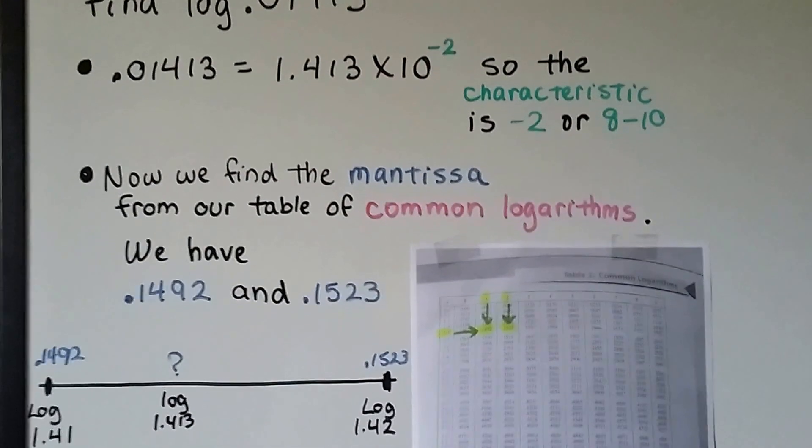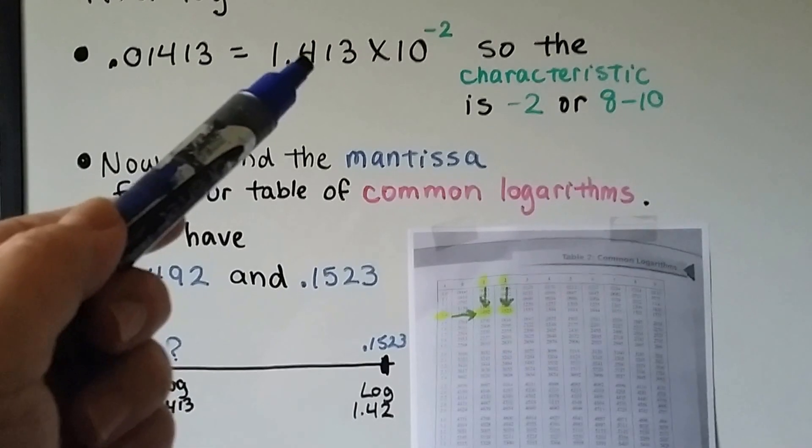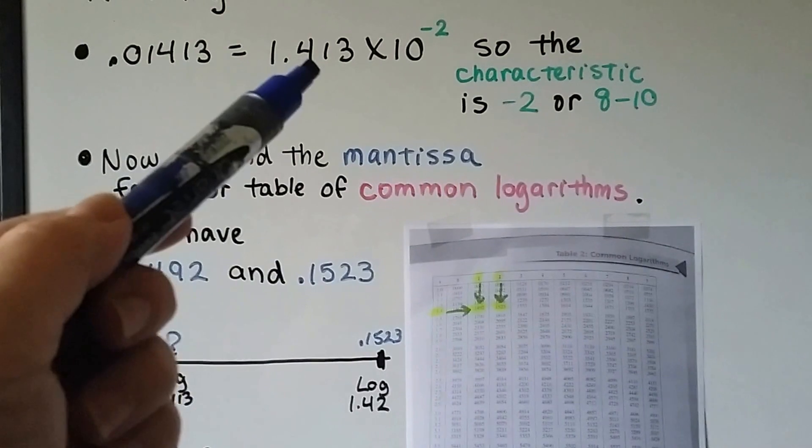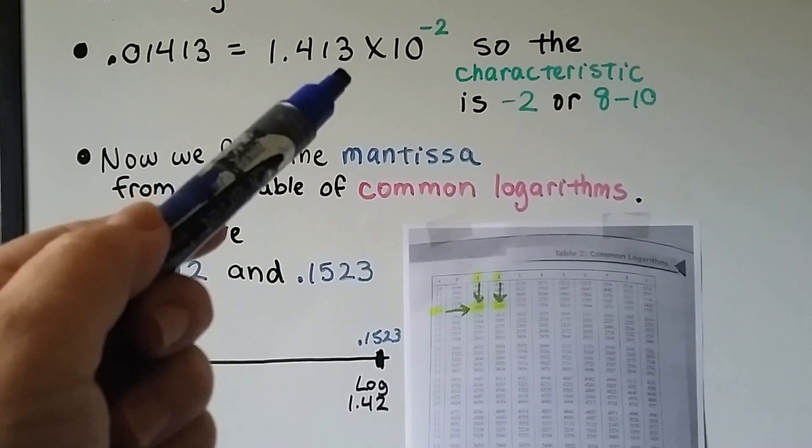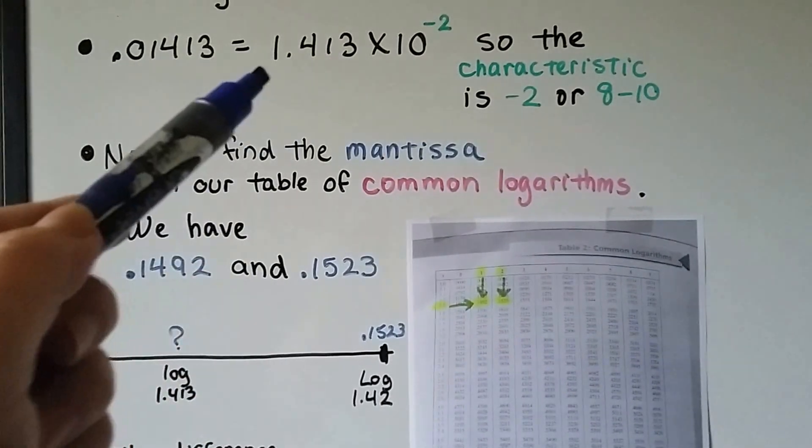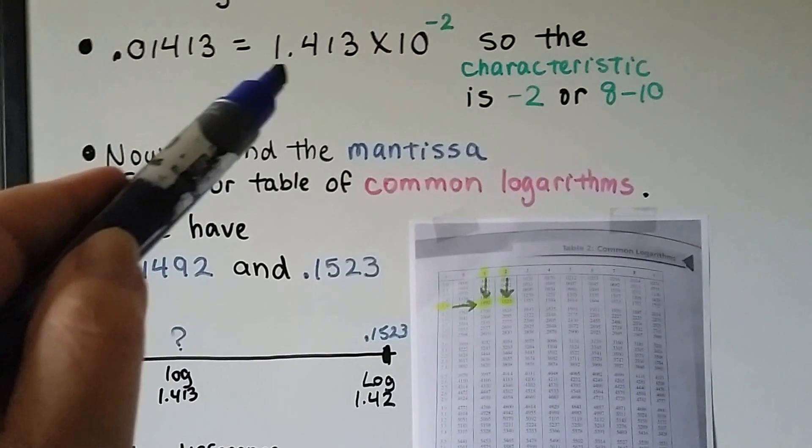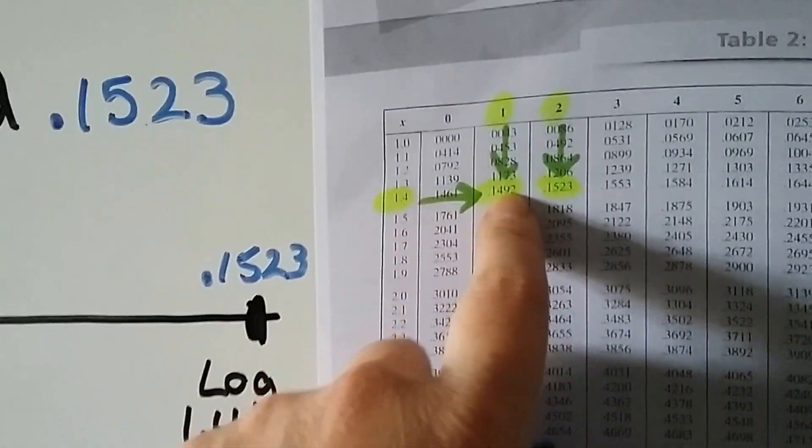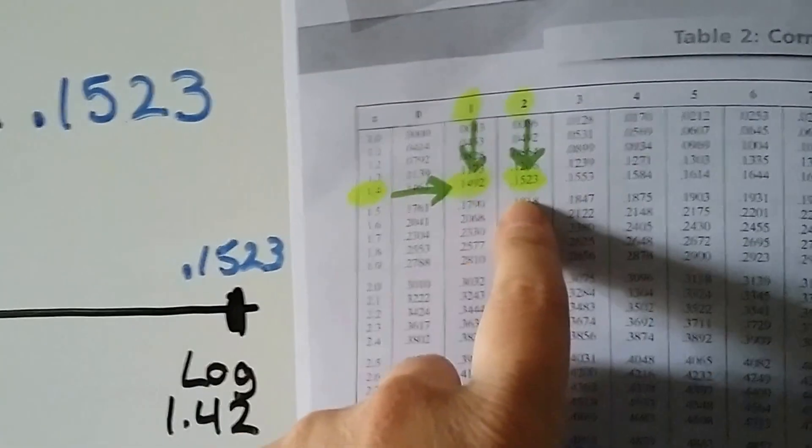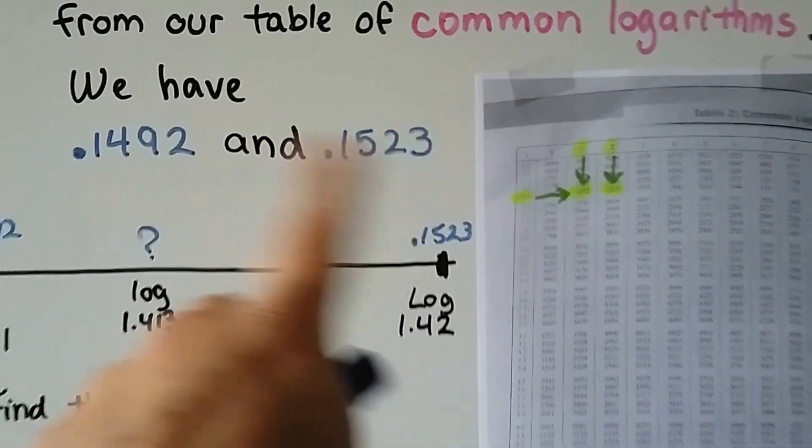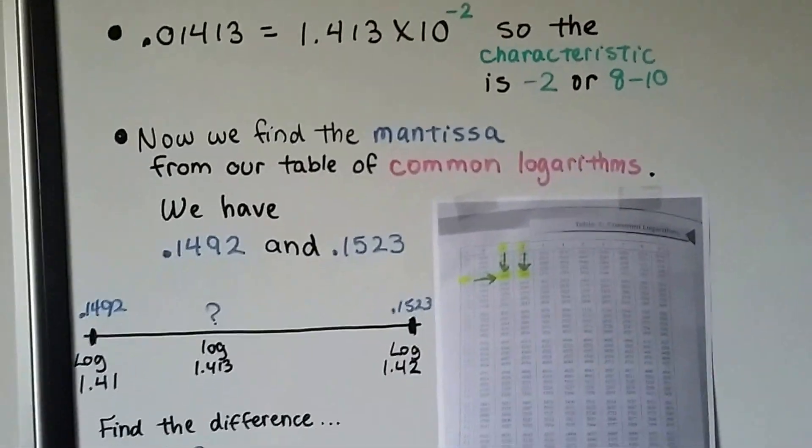Now we find the mantissa from our table of common logarithms. We've got 1.41, and we know this is between that and 1.42. That 3 means it's in between 1.41 and 1.42. So we look up 1.41. Here's 1.41 and 1.42. So we know it's in between 0.1492 and 0.1523. And that little 3 tells us it's 3 tenths of the way.